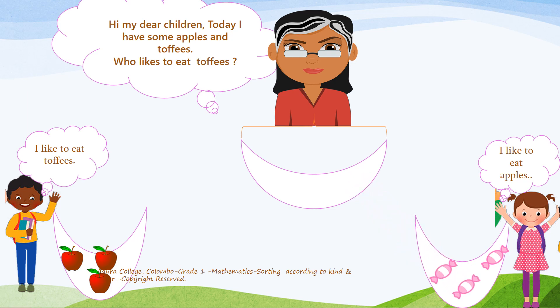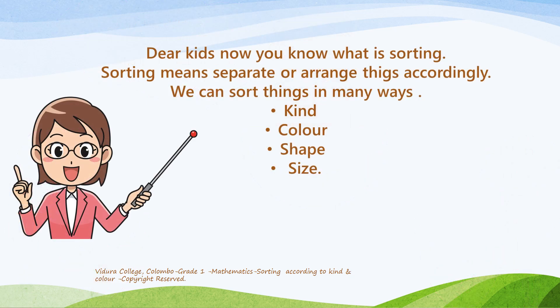Look here — I'm sorting them. That means I'm separating them: toffees in one basket and apples in the other basket. I hope you could understand the activity properly.